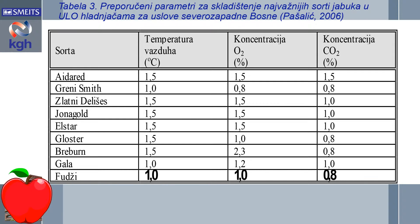Utisak je da se manje vodi računa o sortnim karakteristikama pri hlađenju u ULO komorama. Preporučene optimalne koncentracije se razlikuju od sorte do sorte — primećuje se da Granny Smith dobro podnosi ekstremno niske koncentracije, čak i do 0,8% kiseonika. S druge strane, sorta Breburn u Bosni se čuva sa 2,3% CO2 i javlja se kao sorta koja je osetljiva na ekstremno nisku koncentraciju kiseonika. Preporučene optimalne koncentracije ugljen-dioksida za čuvanje u ULO komorama kreću se od 0,8% do 1,5%.